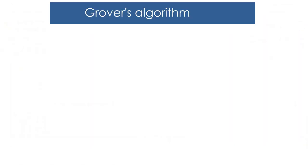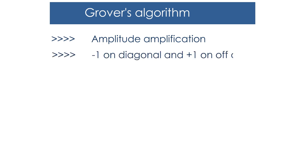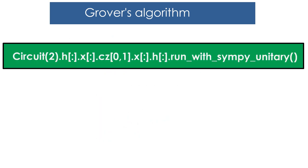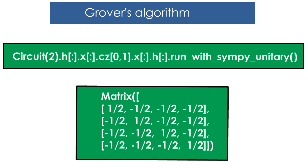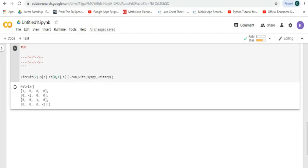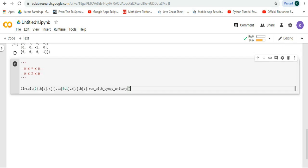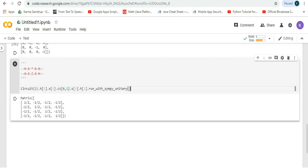Now we are going to do amplitude amplification. It is a circuit which has minus one on the diagonal and plus one on the off-diagonal, and as a result we can get the marked state vector. The amplitude amplification circuit on 2 qubits is like this. When we run this in Google Colab we'll get this output. Let's try it — run it — and we can see that we get this output.